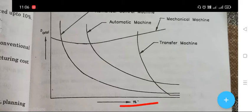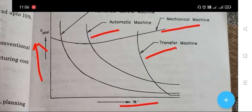In the diagram, N is on the horizontal axis and P_total on the vertical axis. The curves show transfer machines, mechanical machines, automatic machines, and numerical control machines. This diagram illustrates total cost versus batch size for different machine types.